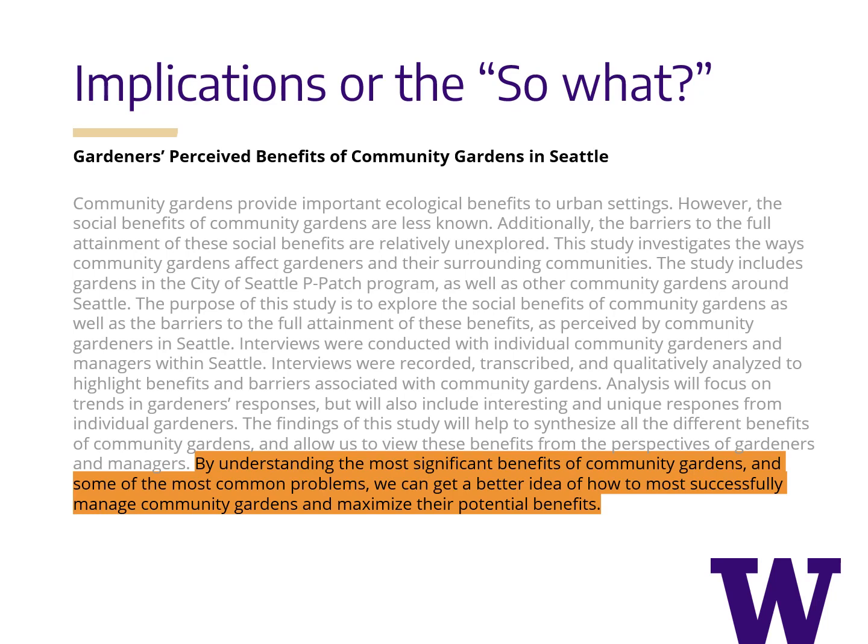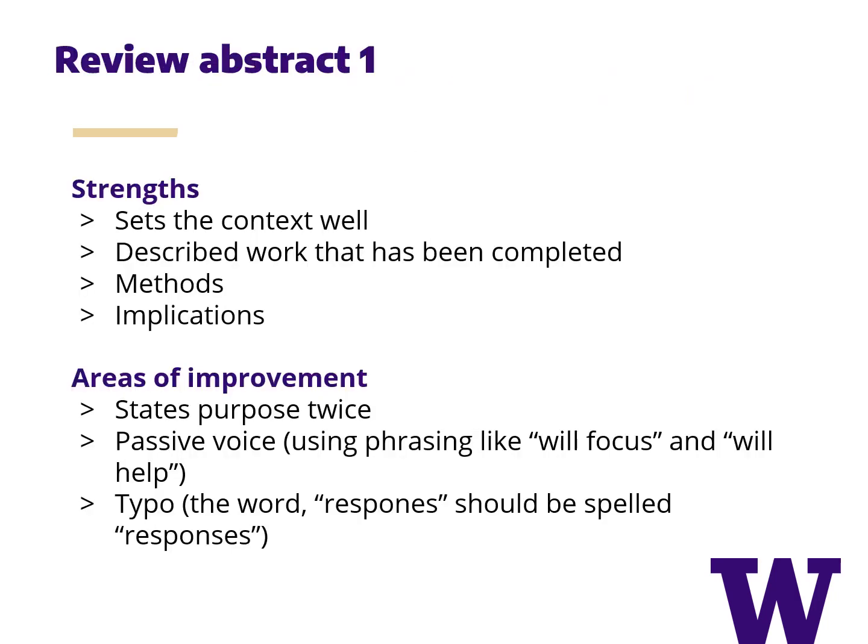To conclude, the author highlights the implications of their work and how it could be applied for the future. So now let's review the strengths and areas of improvement for this abstract. For strengths: it sets the context for the research question well so the reader clearly understands why this research is relevant. The author describes work that has been completed instead of talking about work that will be done in the future. The methods were concise and free of any jargon and technical language. The implications of the research were clearly stated at the end of the paragraph. For areas of improvement: the purpose is stated twice, the author frequently uses passive voice throughout the abstract, and a typo was left in the final version that should have been caught in the revision process.